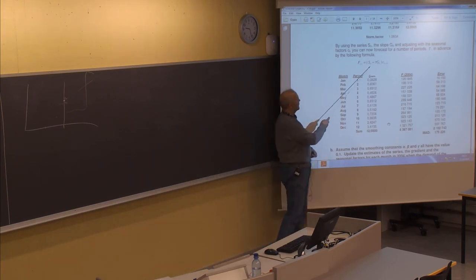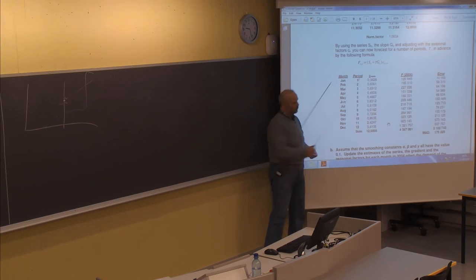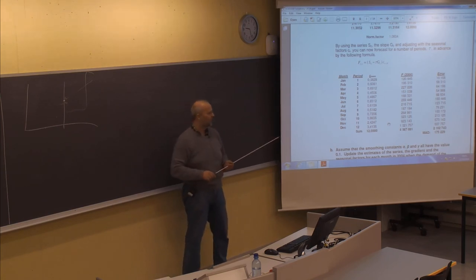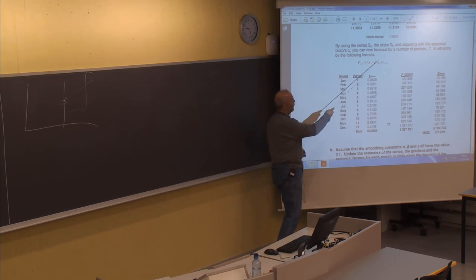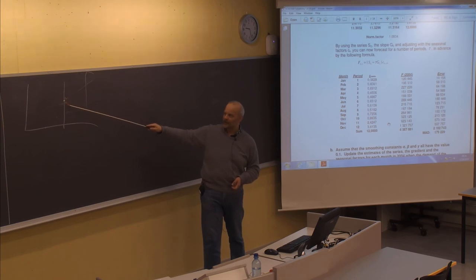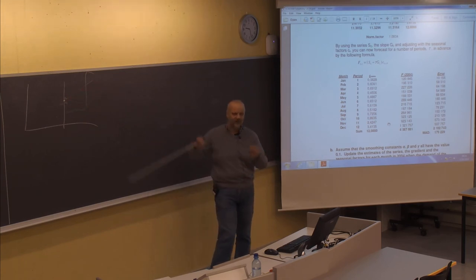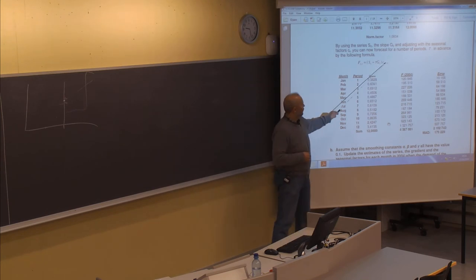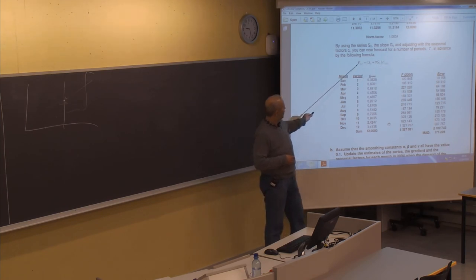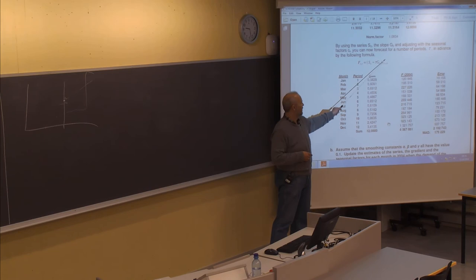For the forecast, we use S0 plus tau multiplied by G0, where tau describes how many months in advance we want to forecast. When forecasting for January, tau is 1; for February it is 2; for March it is 3, and so on. So we continue along the trend line by adding G0 one, two, three, four, five times for the exact number of periods we want to forecast in advance. We also need to adjust by the seasonal factor, and it is important that the seasonal factor must correspond to the same month for which you are creating the forecast.